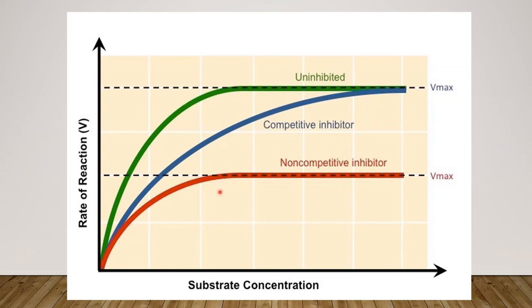Now let's take a look at the non-competitive inhibitor. When substrate concentration increases with a non-competitive inhibitor present, the maximum rate of reaction is reduced. Non-competitive inhibitors bind to a site other than the active site — we call it the allosteric site. In doing so, it distorts the 3D tertiary structure of the enzyme so it can no longer catalyze a reaction. Since they do not compete with substrate molecules, non-competitive inhibitors are not affected by substrate concentration.